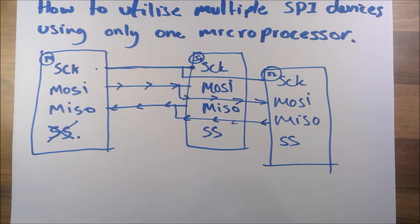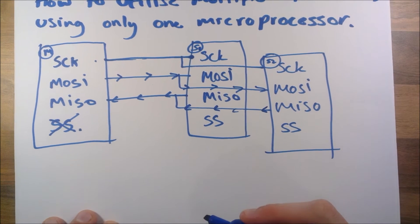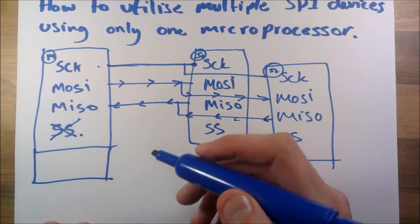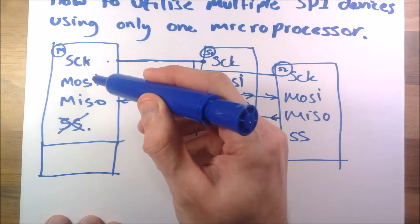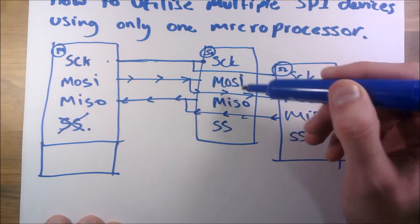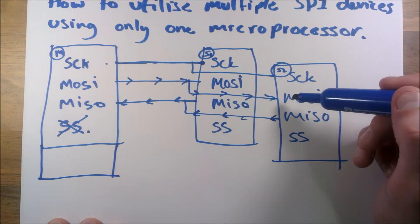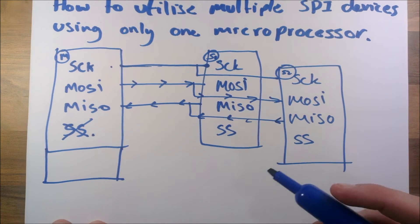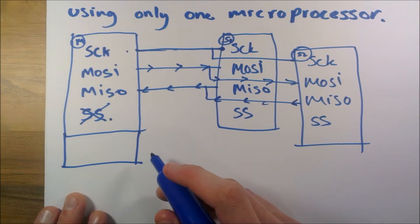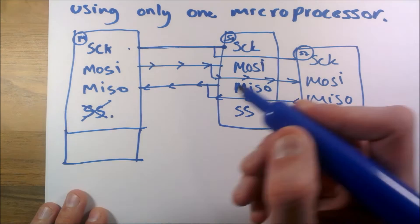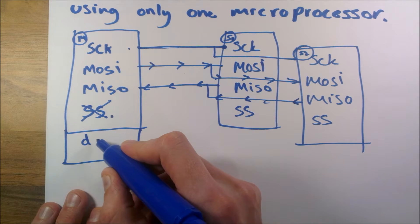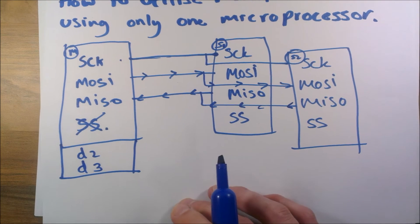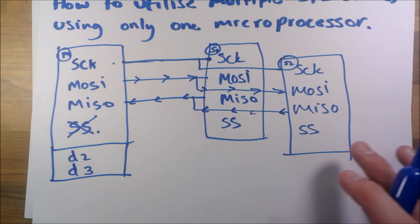This is how it works. Let's say on our master, this is an Arduino, and these four pins are default hardware set pins. Let's say we want to use digital pin two, so I'll call that D2, and we've got another one D3. So we've got two more pins which we're going to use on the Arduino.